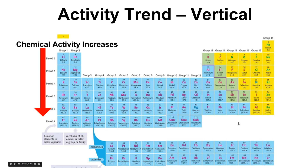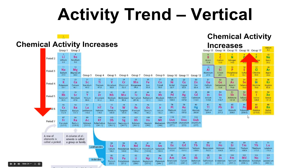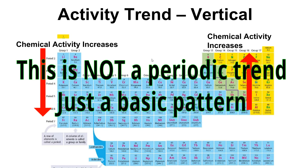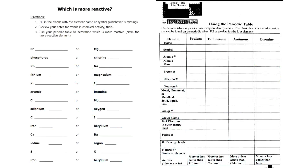On the right side, it's the opposite: as I go up the group, chemical activity increases. Write both of these on your periodic table. Quick note — this is not a periodic trend, just a basic pattern on the periodic table. Now that you've taken notes, it's time to apply what you've learned. Complete the 'Which is More Reactive' worksheet and the 'Using the Periodic Table' worksheet in your packet. Whatever you don't finish is homework.